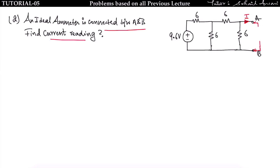Since the ideal ammeter has zero internal resistance, it is replaced by a short circuit. Now this a-b branch is short-circuited, meaning the 6-ohm resistor is of no use. The circuit will then be simplified accordingly.